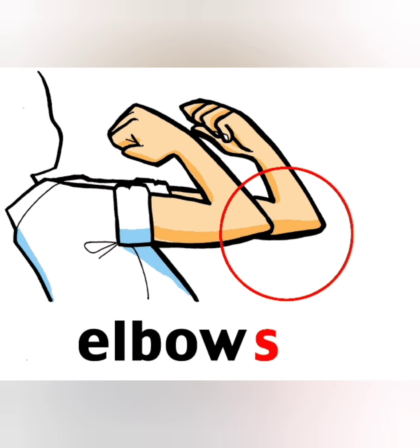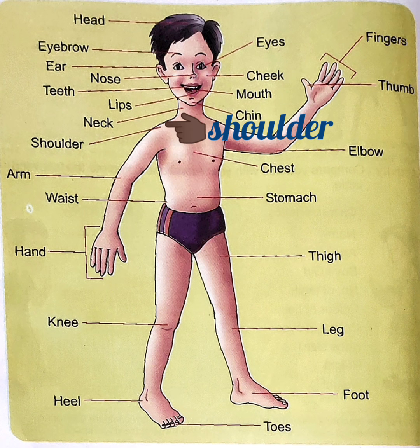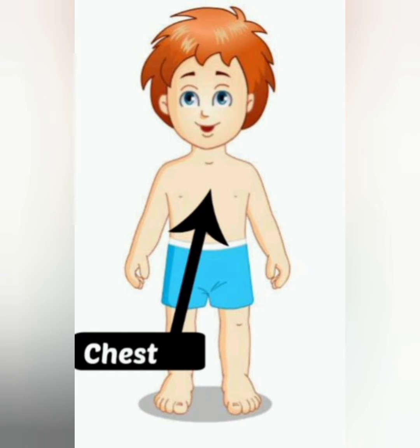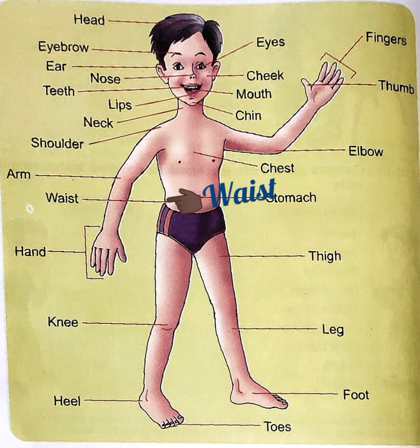And also we can see shoulder. Look at here — shoulder. And some other body parts: stomach. Whatever we eat goes into our stomach. This is our chest part. And this is our waist part.